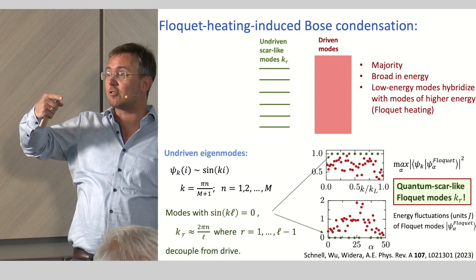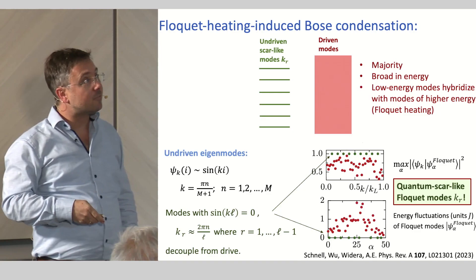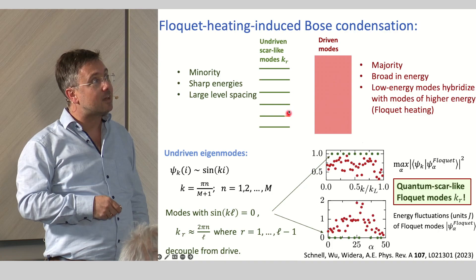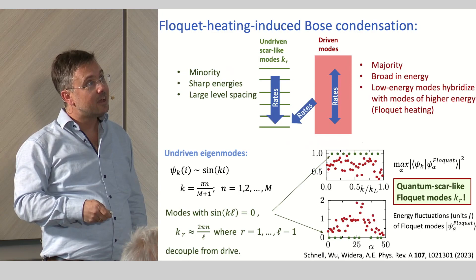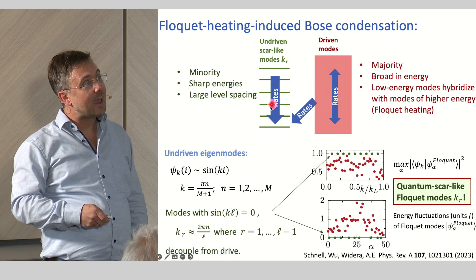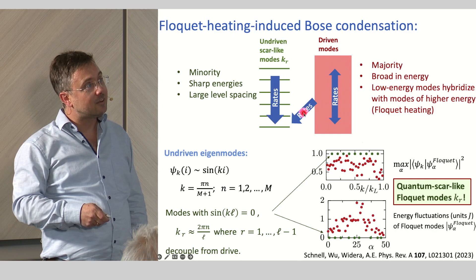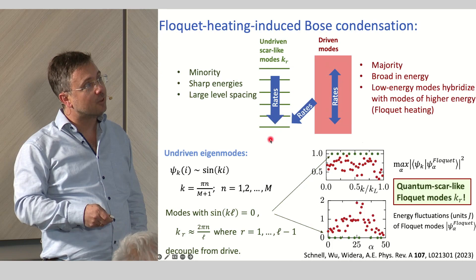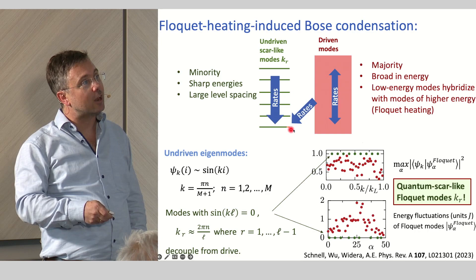Then you have the undriven modes. They are the minority. They have sharp energies and they have an increased level spacing with respect to the original system. And now if you look at what the bath does, the bath, first of all, because these are broad in energy, distributes particles equally between these driven modes. Because of the large lattice spacing, it efficiently transports particles down here. And since these systems, we have this Floquet heating, there is, on average, a rate transporting particles from this hot bus to the lowest state or to these undriven modes. And this is like a thermoelectric effect. So you heat the system so there is some particle flow to the other system which is non-driven.